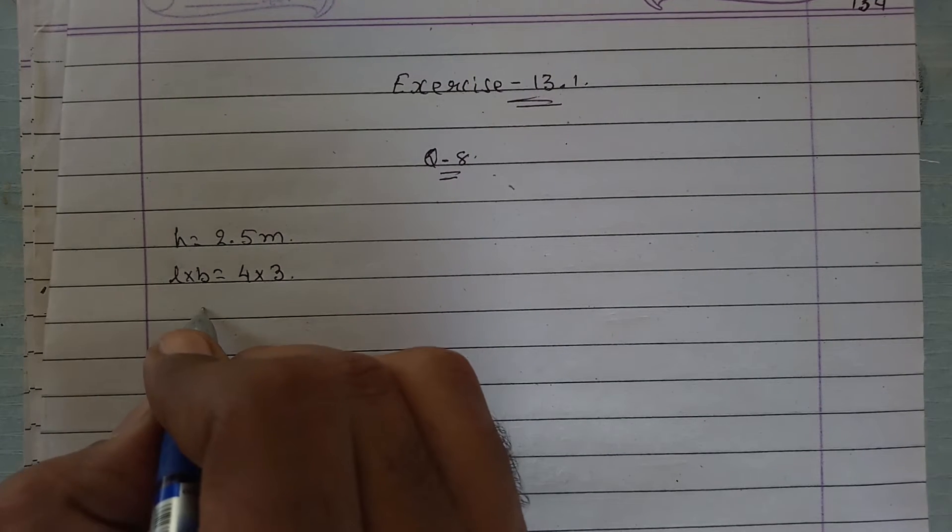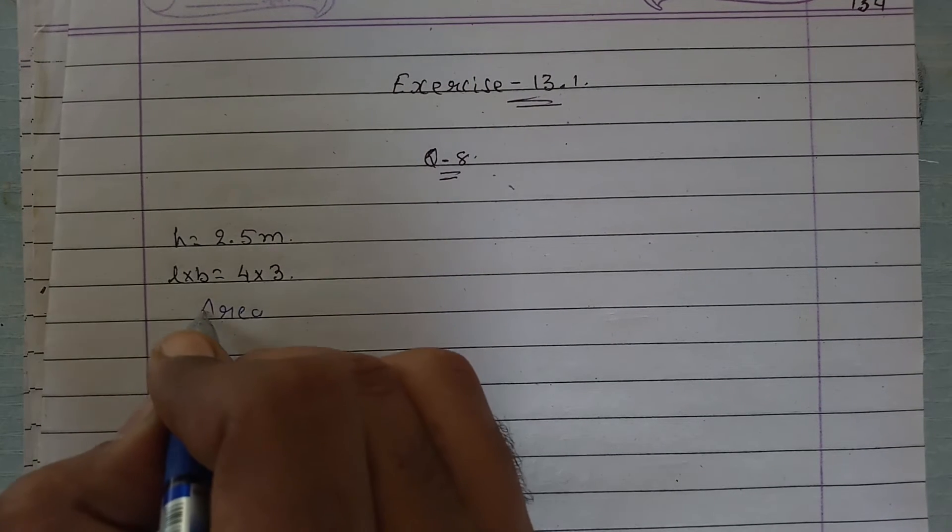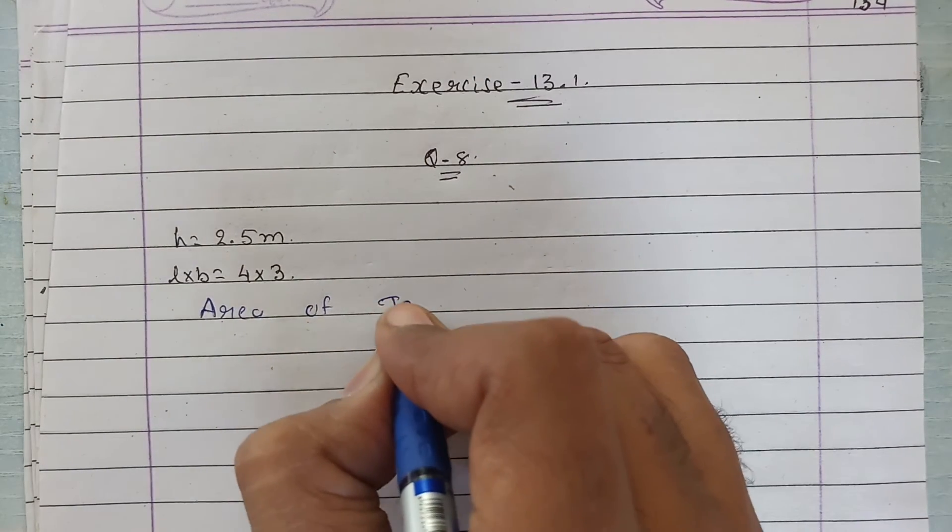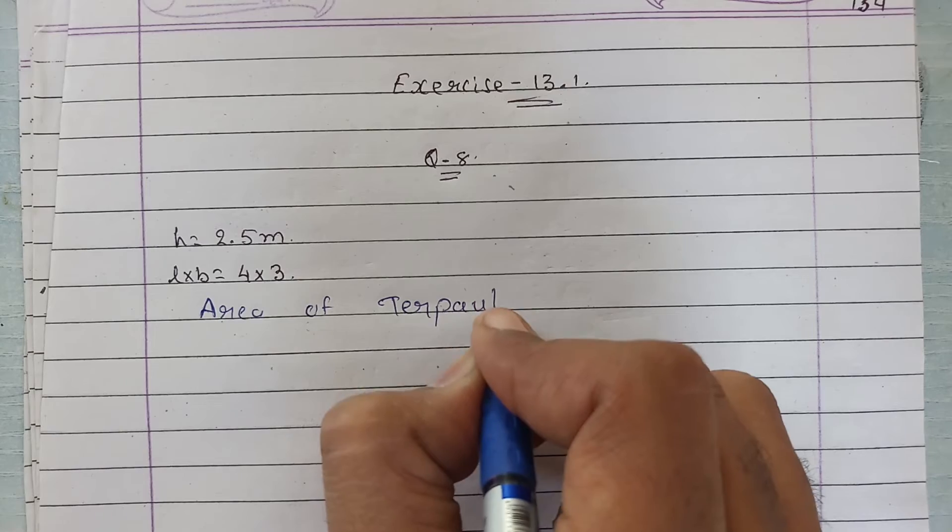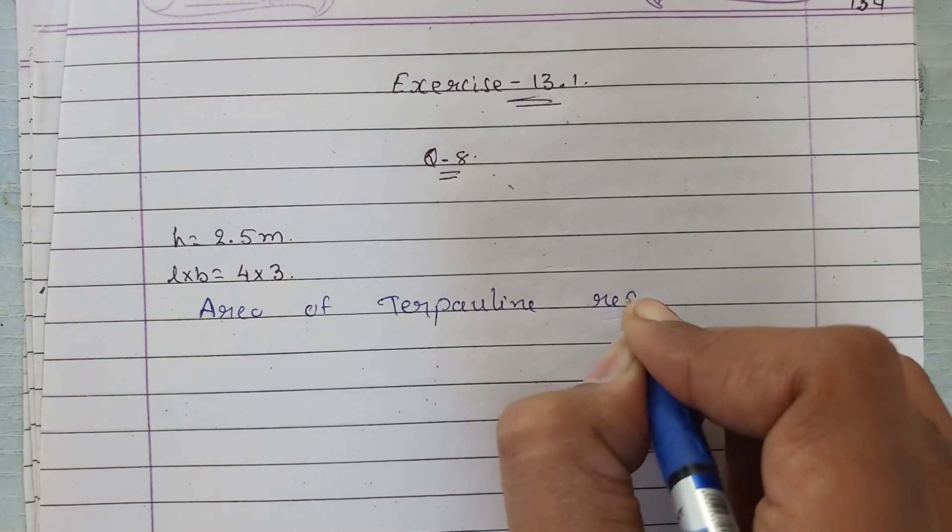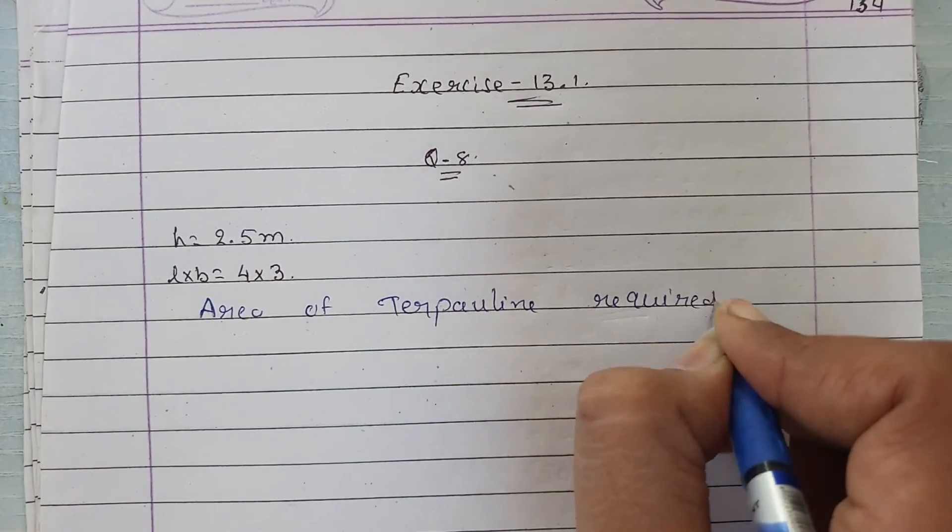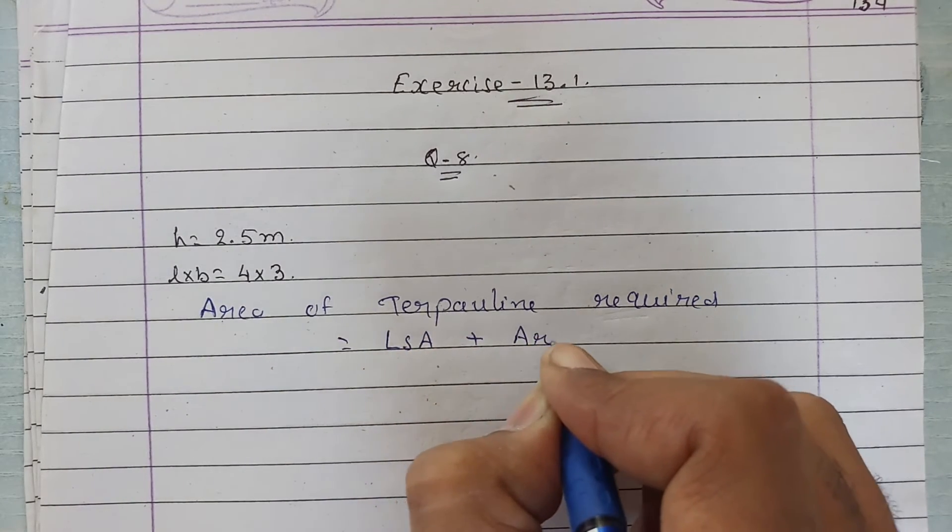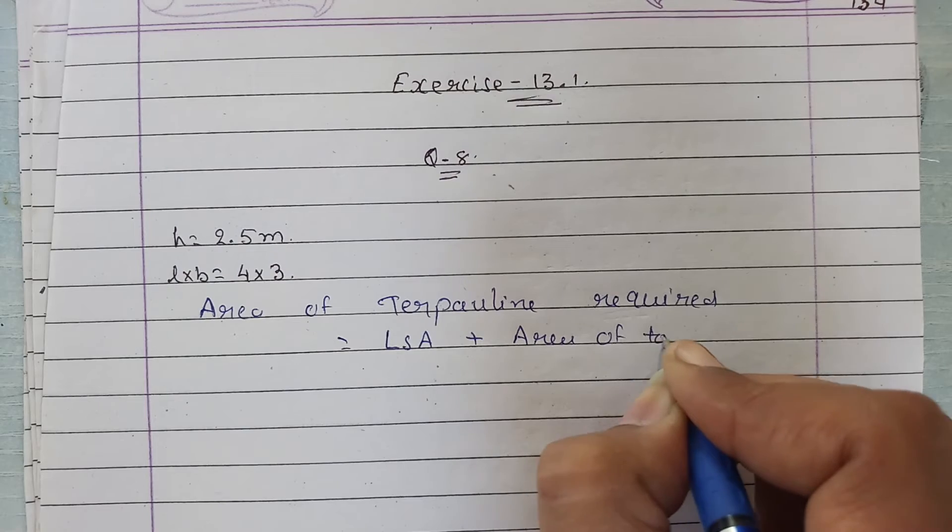So the area of tarpaulin required will be lateral surface area plus area of top.